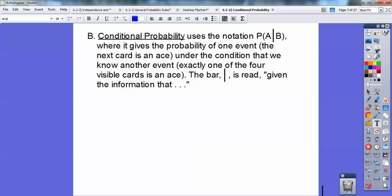Conditional Probability uses notation with that bar symbol, the probability of A bar B, where it gives the probability of one event (that the next card is an ace, for example) under the condition that we know another event. For example, exactly one of the four visible cards is an ace. The bar is read "given the information that."